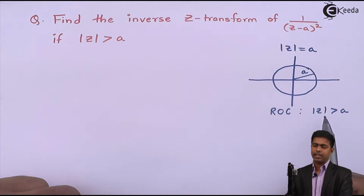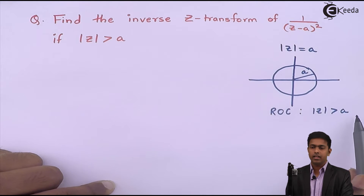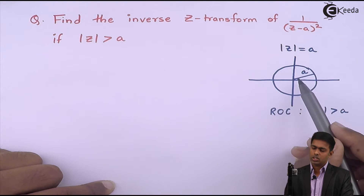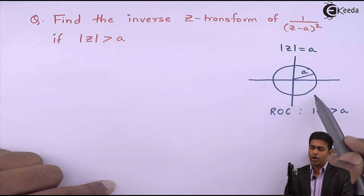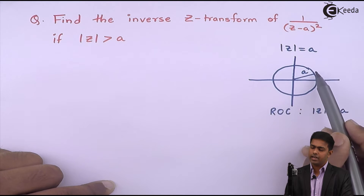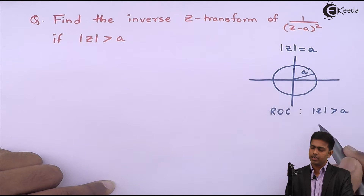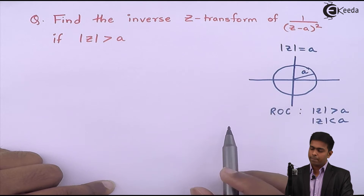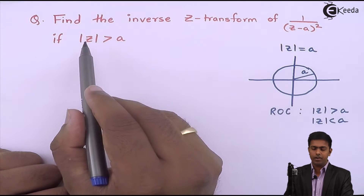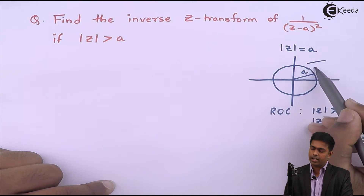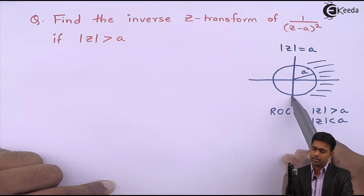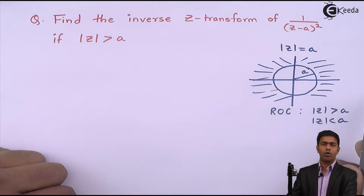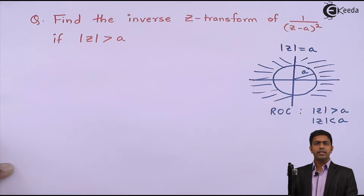If we want to draw this area where mod Z is greater than A, we find that this area is nothing but the area outside the circle. Because till the circle boundary we get mod Z equal to A, and inside the circle mod Z is less than A. So the area given by mod Z greater than A is the area outside the circle. This is the region of convergence, and for this region we have to find out the sequence.